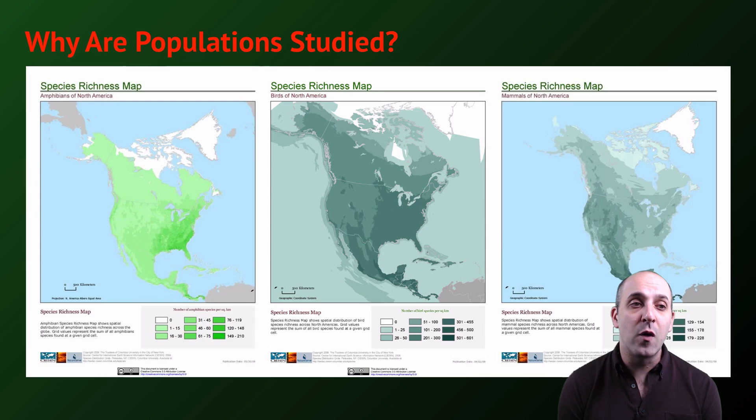Which leads us to our next question of why should we even care to study populations? This graphic may help to explain that. We see three different maps of species richness for three different major types of vertebrate organisms in North America. We have an amphibian diversity map, a bird diversity map, and a mammal diversity map. If we want to know which areas of North America are most suited to the life strategies of amphibians, or birds, or mammals, or humans, or anything else, we're going to need to be able to understand how those populations are distributed. That's a major reason why we study populations.